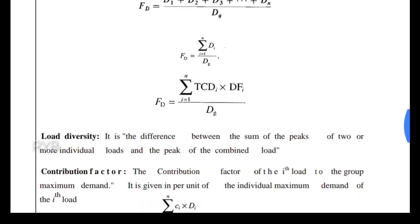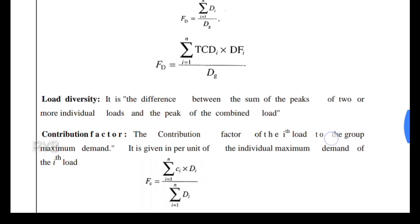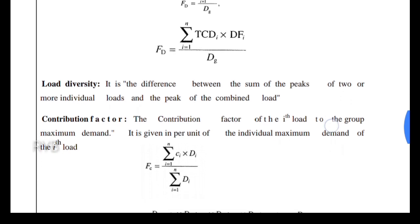Load diversity is defined as the difference between the sum of the individual peak loads of two or more loads and the peak of the combined load. This difference between the sum of individual peak loads and the combined peak load is called load diversity.